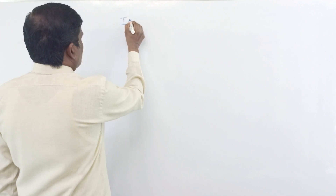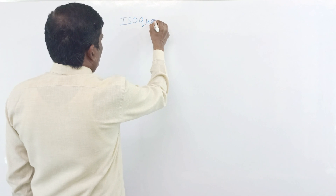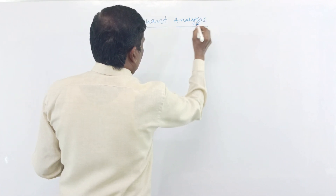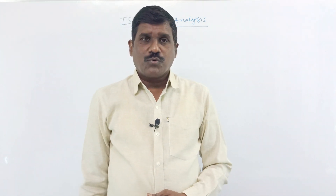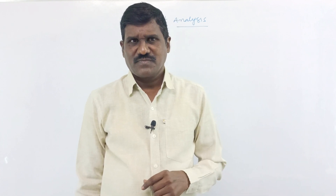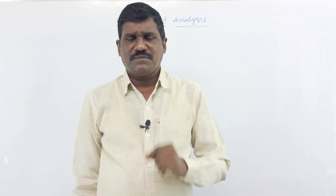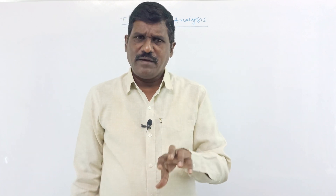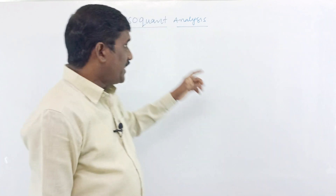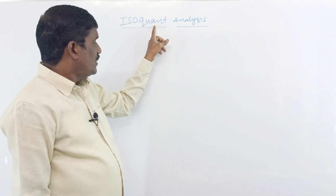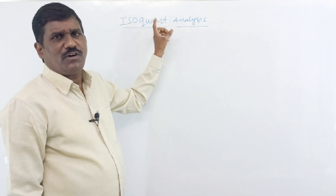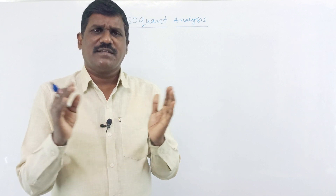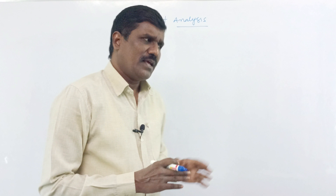Isoquants. In the isoquants analysis, a producer wants to produce with the help of two factors: one is labor, the second one is capital. By the combination of these two goods, he will get equal production. 'Iso' means equal, 'quants' means equal quantity. By using labor and capital, he wants to get equal production — that is what is analyzed here.